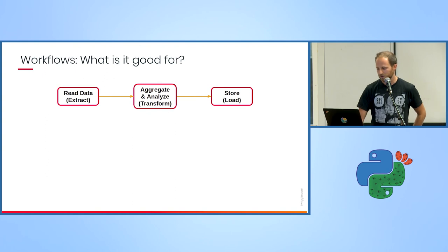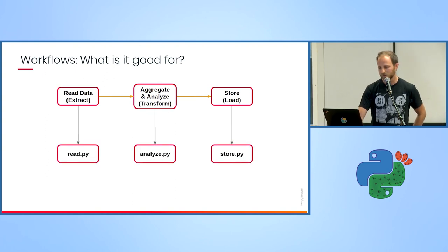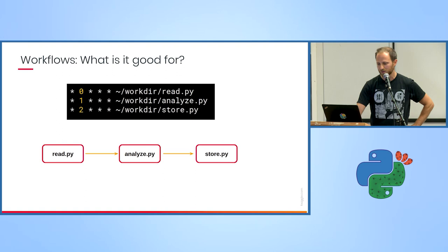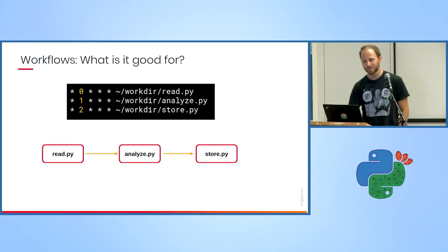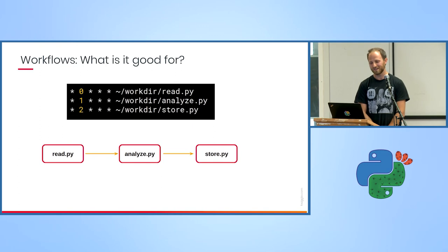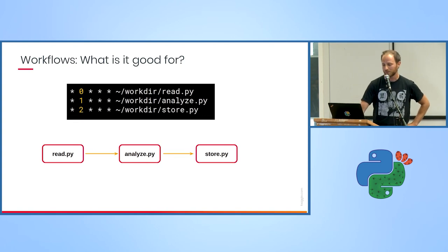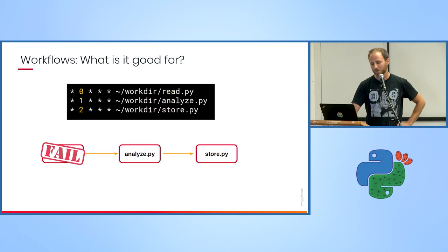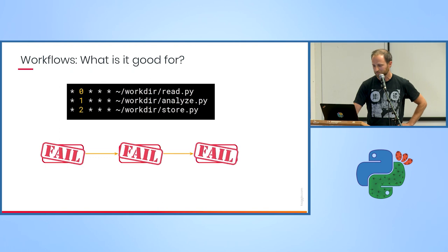Say you have customer logs you want to read from some cloud storage, then aggregate or analyze them and store into your own storage. The simple way to do it is to create three Python scripts which will be invoked sequentially using a cron job. This will work unless something fails. For example, if the read step takes more than an hour or fails due to network problems, it's hard to tell what analyze will do. In the best case it reads nothing and writes nothing, but it can also read insufficient data and fail, and then the store step fails too.